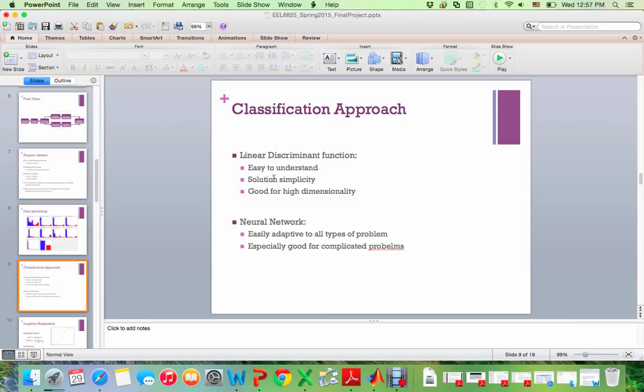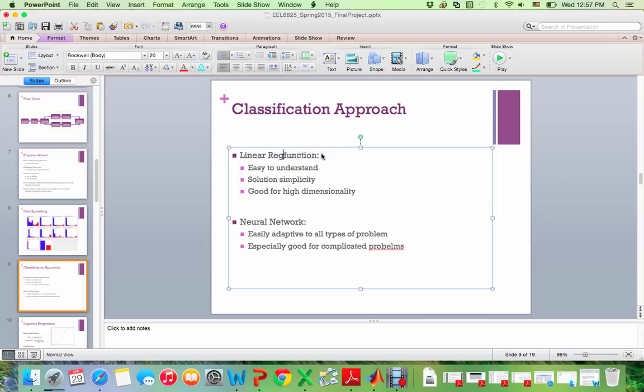So the classification approach. We use logistic regression. This is easy to understand and the solution is simple. It's the linear weight factors that you will put in there and then transfer to sigmoid function that become nonlinear but still the hypothesis function is linear. So this is good for high dimensionality modeling and also we use neural network. Neural network has been applied to so many different things. It's really easy to adapt to all kinds of problems and it's especially good for complicated logic problems.